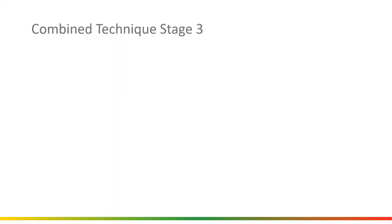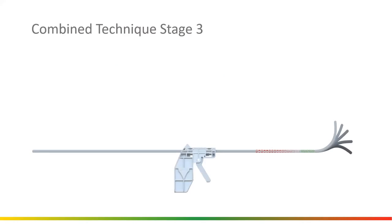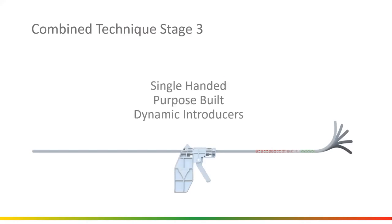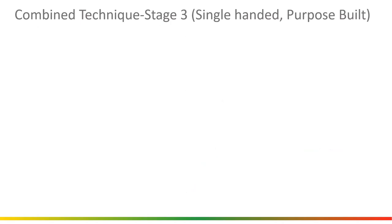The next stage of combined technique — stage three — is dynamic introducers that are single-handed. They're purpose-built as a dynamic introducer, no longer cross-purposing fiber optic bronchoscopes with all their limitations. They have dynamic tips and flexible shafts. Our particular one has a removable handle and a depth gauge as well. There is one other device on the market that is a dynamic stylet; however, it doesn't have a handle and doesn't have full articulation.